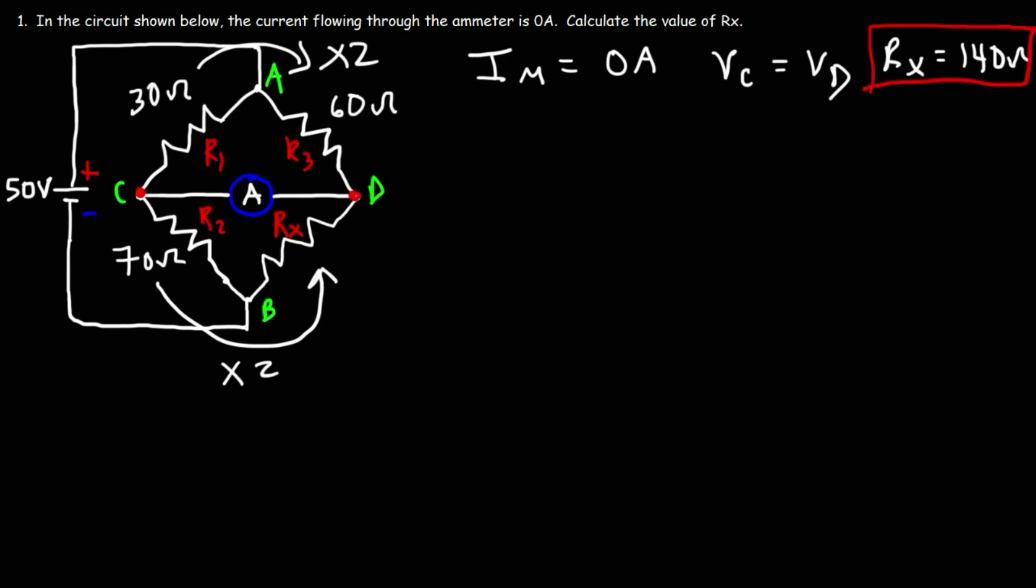Now that's the answer, but I'm going to show you what formulas you can use to confirm your answer. Now the first thing we need to realize is that because no current flows through the ammeter, we can just get rid of the ammeter. Now we can redraw the circuit like this. So this circuit is equivalent to the one I'm about to draw.